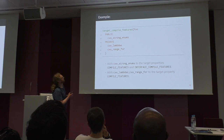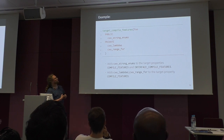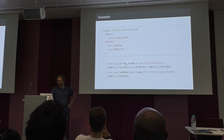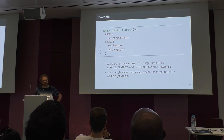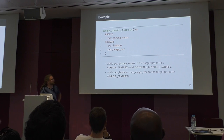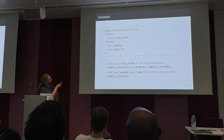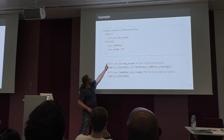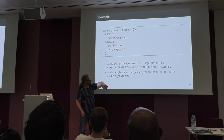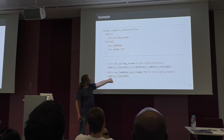Here's an example of target_compile_features. For the target foo, we call target_compile_features with keywords public and private and some values. This tells CMake what compiler features we want to use for this target, and CMake decides what command line flag — like the C++ standard version — will be necessary. It would probably be C++11 in this case.